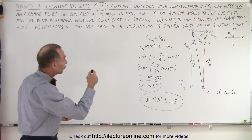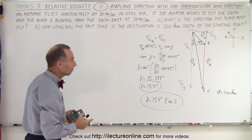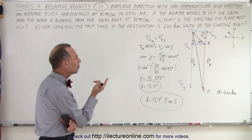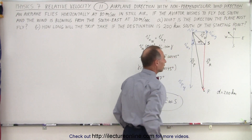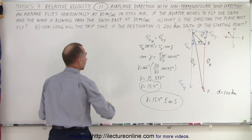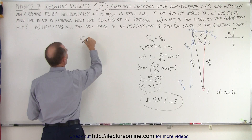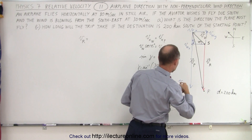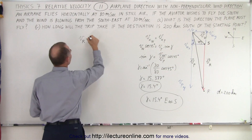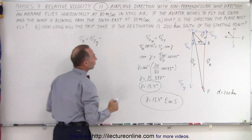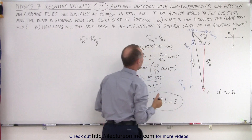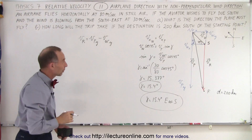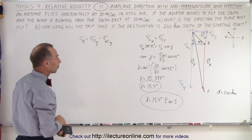Now the question is: if the distance is 200 kilometers, how long will it take for the plane to get to its destination? We need to figure out the resultant velocity V_R, which requires another vector sum. V_R will be equal to the y-component of the plane's velocity minus the y-component of the wind's velocity, since that wind component acts in the opposite direction.